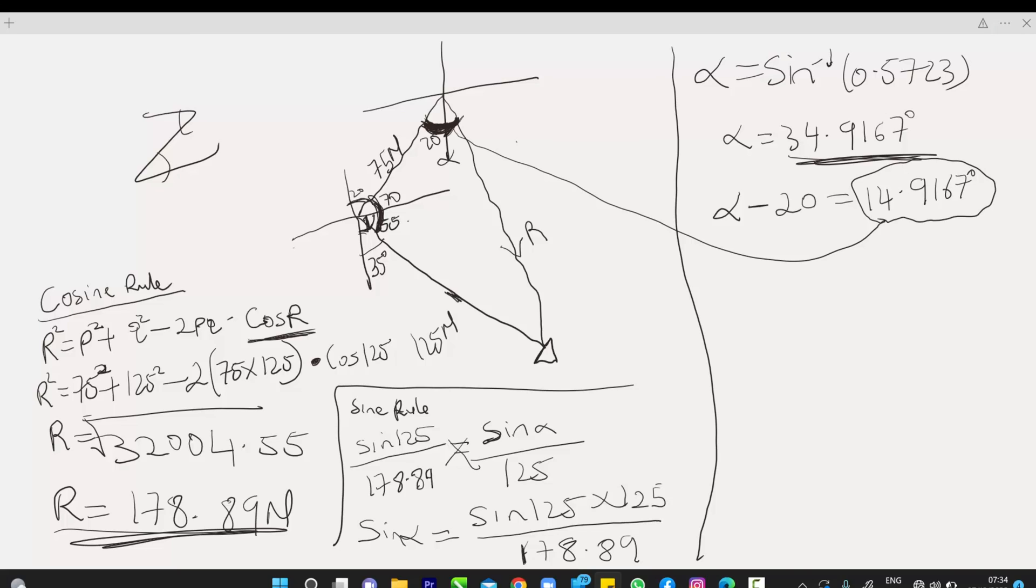So, to find the rest of this angle, we know this is 90. So, we say 90 minus 14.9167, 75.0833. So, we call this angle, 75, we call this angle, 75.0833.